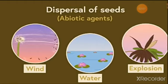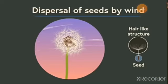The first agent of dispersal of seed is wind. Some plants like dandelions have parachute-like or hair-like structures attached and they are so light in weight that they get easily carried away by the wind. Thus, even the seeds get carried to distant places.